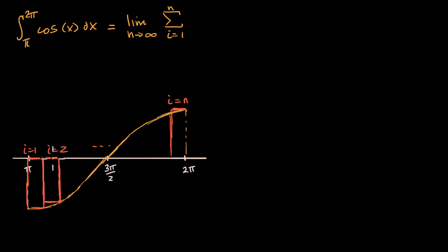What is the width of each of these rectangles going to be? Well, I am taking this interval from π to 2π, and I'm gonna divide it into n equal intervals. So the width of each of these is going to be 2π minus π.